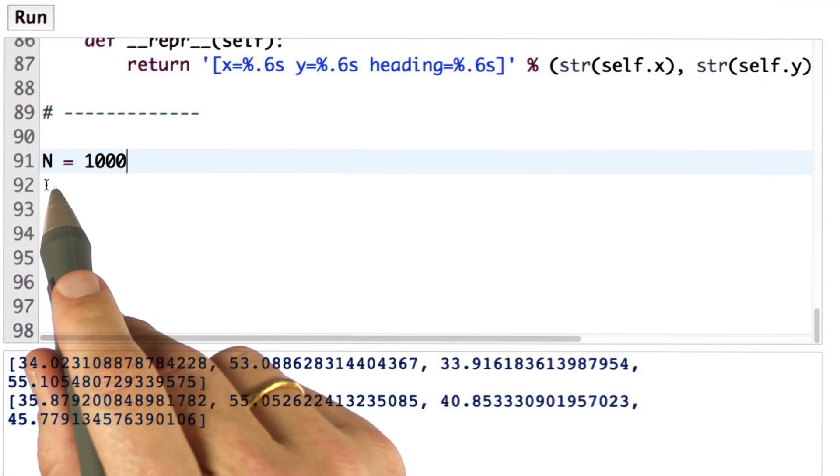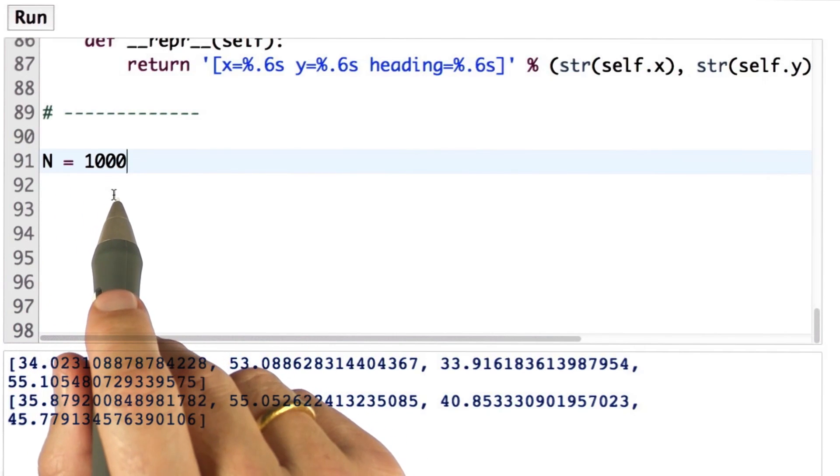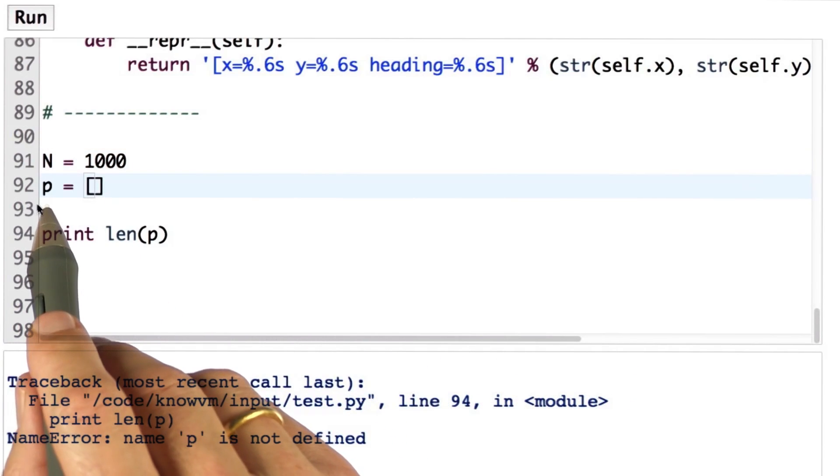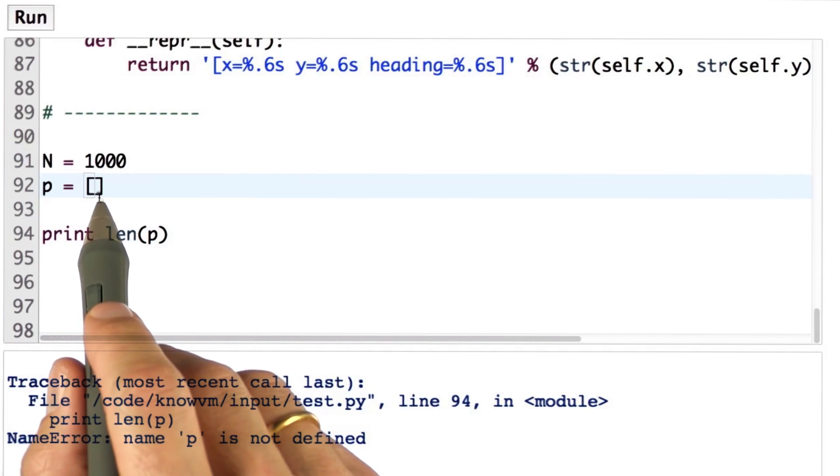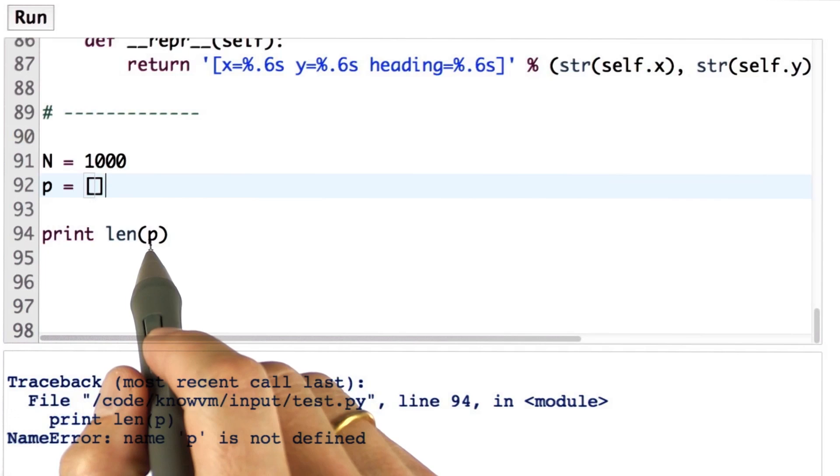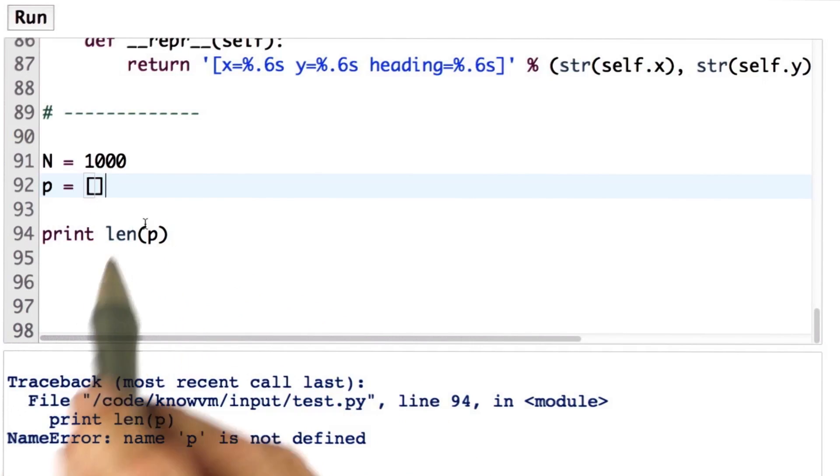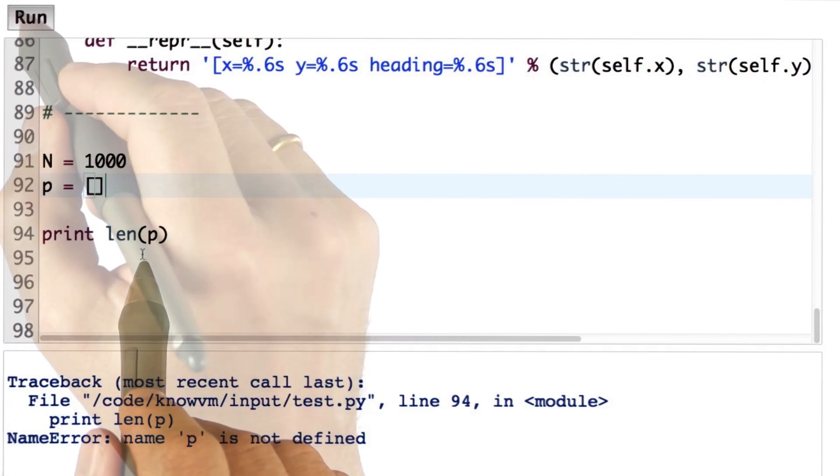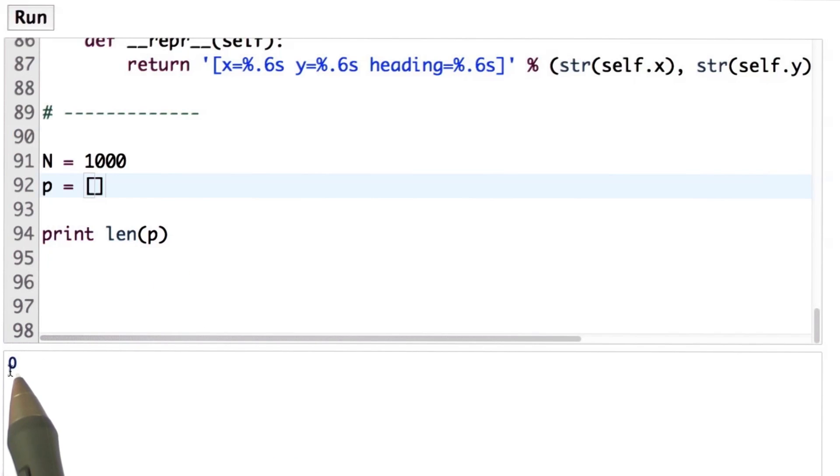So let's do this. Let me set n equals 1,000 for 1,000 particles. Here's my initial set of particles, going to be an empty list. And I want you to fill in some code, after which we have 1,000 particles assigned to this vector over here. So when I print the length of this thing, I will get 1,000 instead of 0.